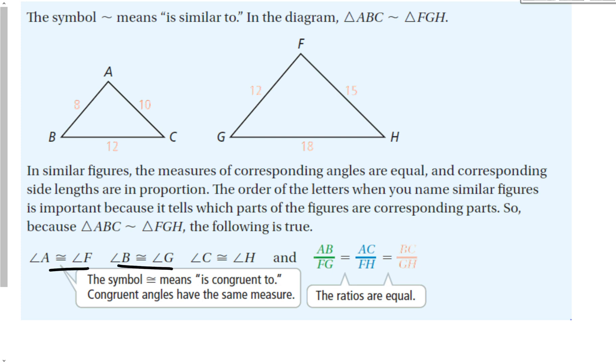Angle A is congruent to F, B is congruent to G, and C is congruent to H. That symbol means is congruent to. When we deal with numbers, we say 3 equals 3, but when we deal with lengths inside geometric figures, we use the congruent to symbol. And my ratios are equal. AB over FG is equal to any other two that match up, like AC over FH or BC over GH. Any of the ratios of corresponding sides are equal to each other.